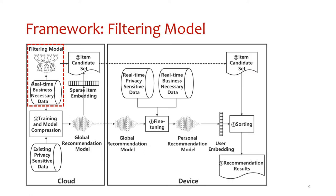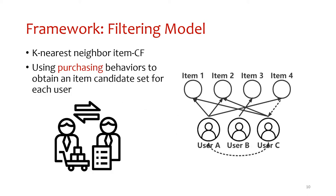This is the architecture of DeepBReath. We will introduce its essential modules, beginning with the filtering module. To reduce the computational overhead of ranking inner products of a given user embedding and item embeddings, and to reduce the network overhead of downloading item embeddings from the cloud, we use a k-nearest neighbor item-based collaborative filtering module to extract an item candidate set from all items.